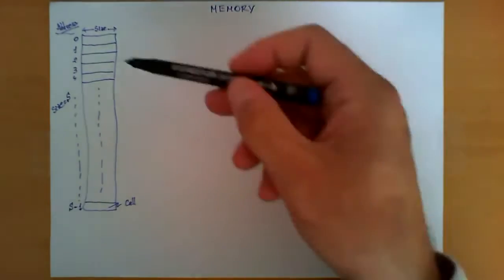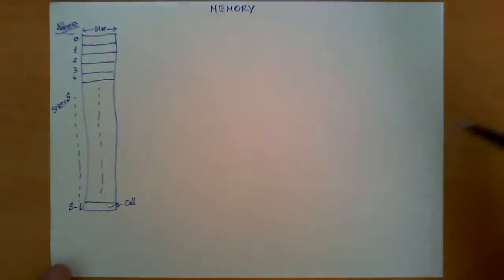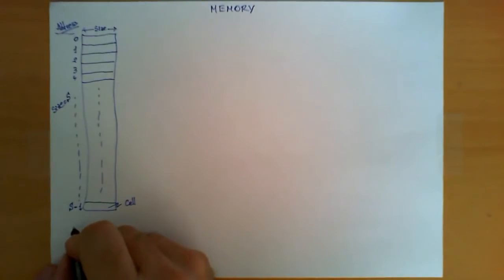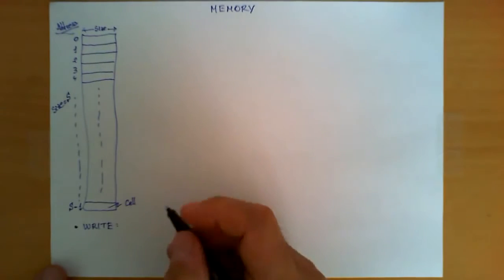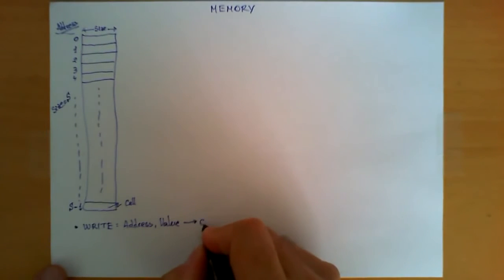Now that we have this table, this is how memory works in a computer system. Let's talk about the two operations that can be done with this table. The two operations are: the first one is a write operation. A write operation receives two things, an address and a value, and it doesn't return anything.